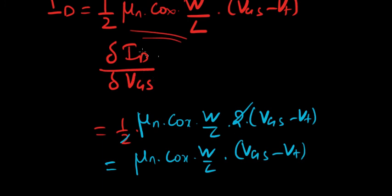So, what was this? Delta ID over Delta VGS which is equal to GM. Correct?